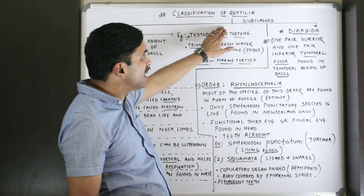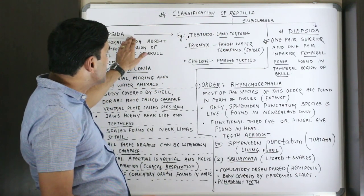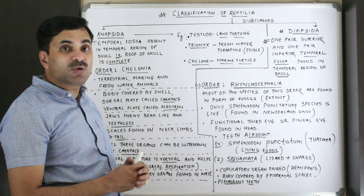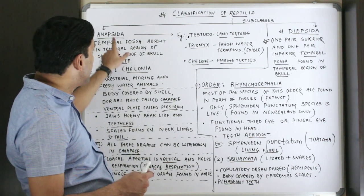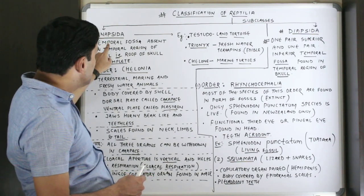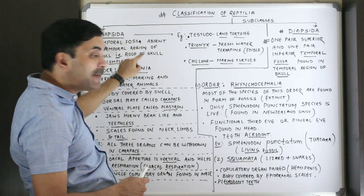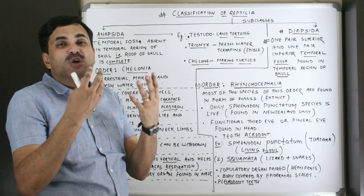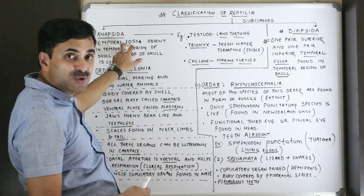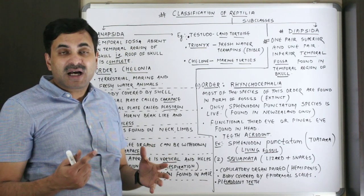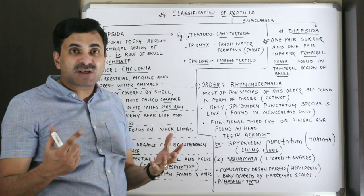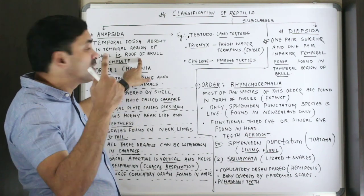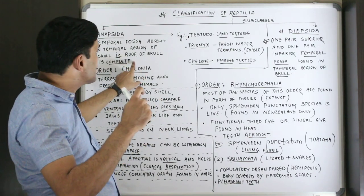Class Reptilia has been divided into two subclasses: one is known as Anapsida and another is known as Diapsida. The name Anapsida is given because 'an' means absent — the temporal fossa is absent in them. The temporal fossa is a sort of depression or notch in the temporal region of the skull. Therefore, the roof of the skull is complete, having no depression.